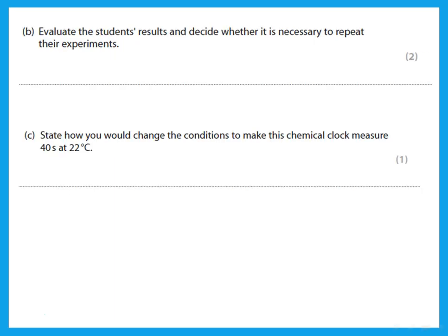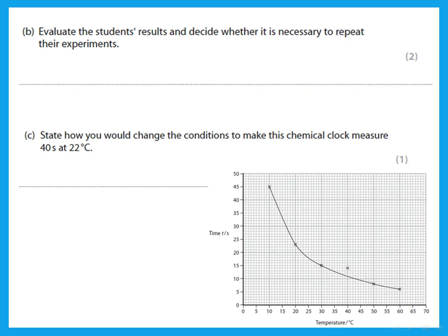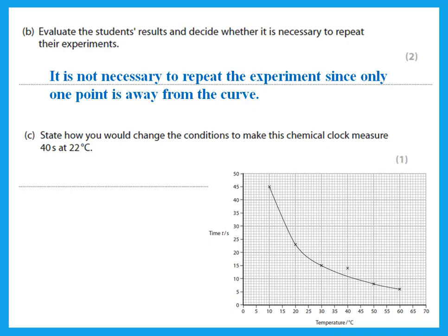Sketch a line showing how the rate of reaction varies with temperature. When we increase the temperature, the rate should increase, but it's not directly proportional—it's not exactly a straight line, but as temperature increases, the rate should increase. Evaluate the students' results and decide whether it is necessary to repeat their experiments. Looking at the results, he has a graph in which most of the points are on the curve except for one, so I would say no, it is not necessary to repeat the experiment since only one point is away from the curve. State how you would change the conditions to make this chemical clock measure 40 seconds. If I want 40 seconds instead of 20, I need the reaction to be slower—I should use more dilute solutions or decrease the concentration of my solution.